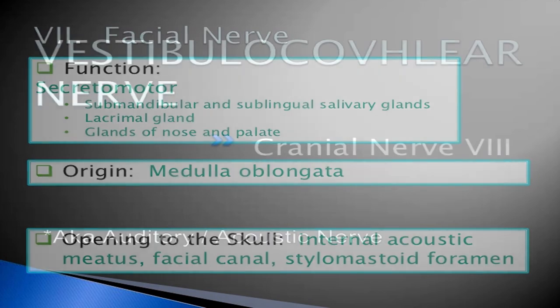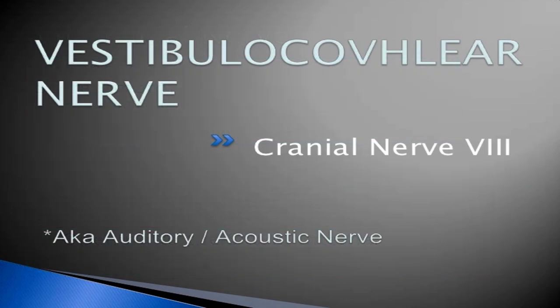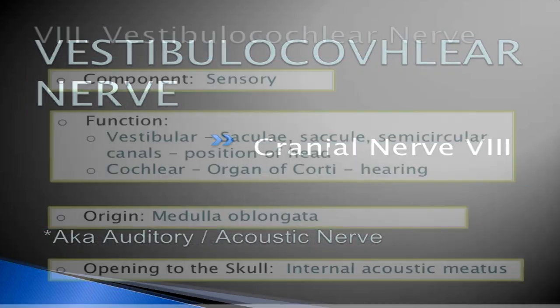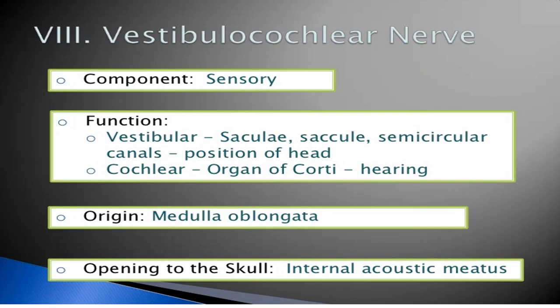The eighth cranial nerve is the vestibulocochlear nerve. Its component is sensory. Its function has two parts: the vestibular part deals with the semicircular canals and position of the head, and the cochlear part deals with the organ of Corti, which is present in our ear and helps in hearing.